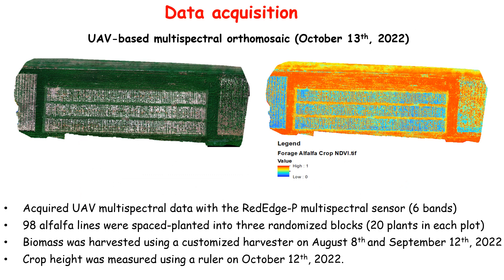Here is the multispectral data we collected in October 2022. The left side is the RGB illustration and the right side is the NDVI. This data includes six different beds covered with RGB, red edge, and near-infrared bands. We planted 98 alfalfa lines over three randomized blocks. The biomass was measured two times and the crop height was measured one time.